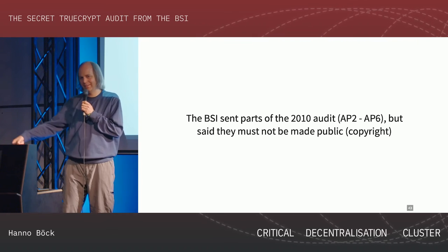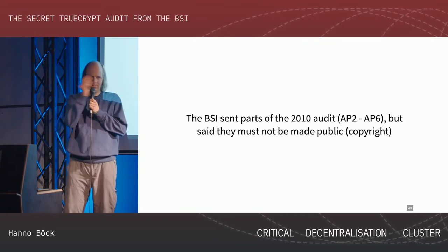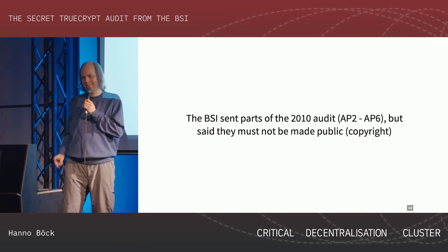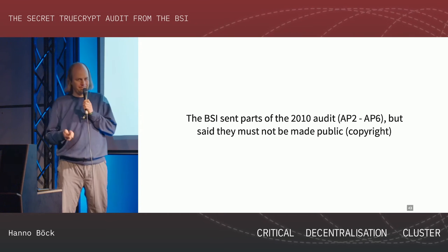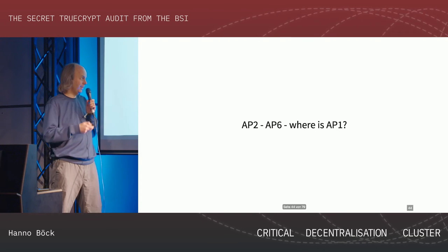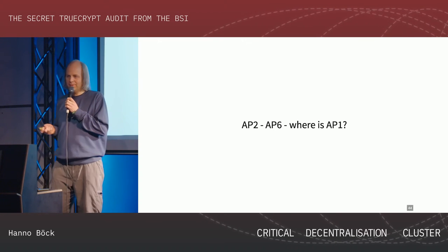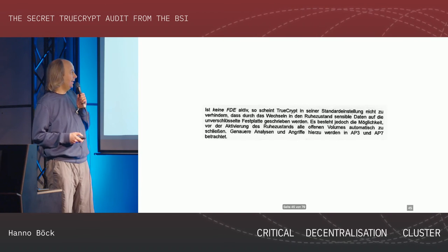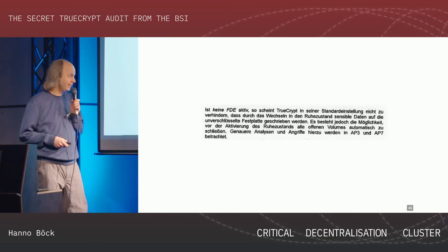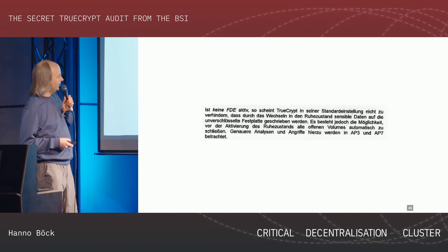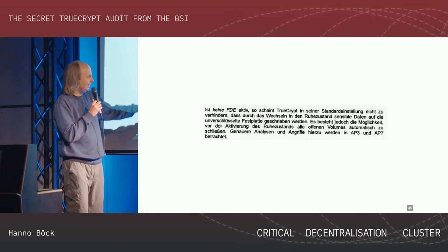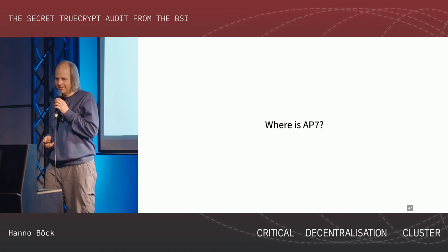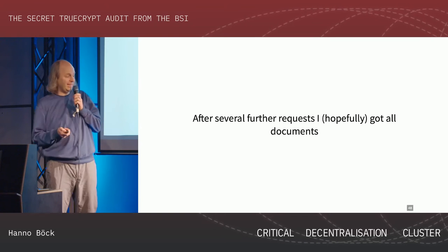Everyone else can also send a request. There was a previous case with a BSI document where the people from Frag den Staat created a one-click option to request the same document, and they got several hundred requests. We planned to do that as well, but then they changed their opinion. But these documents were numbered AP2 to AP6, so I was wondering - maybe there's something missing, like is there an AP1? And then reading the documents, one of them references AP3 and AP7. So where's AP7? I sent more requests to BSI, and eventually got hopefully all the documents.